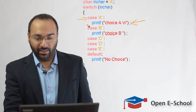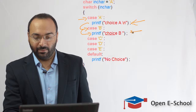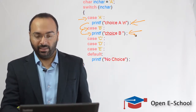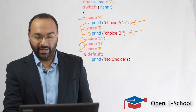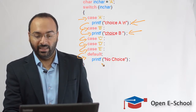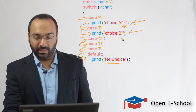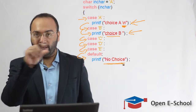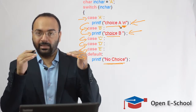Because there is no break statement after case A, execution falls through directly into case B, and 'choice B' gets printed on the next line. There is no break in case B either, so we move to case C — nothing to do. Case D — nothing to do. Case E — nothing to do. Then we enter the default case and print 'no choice'. Notice that case B has a newline character but the default does not, so 'choice B' and 'no choice' are printed on the same second line.